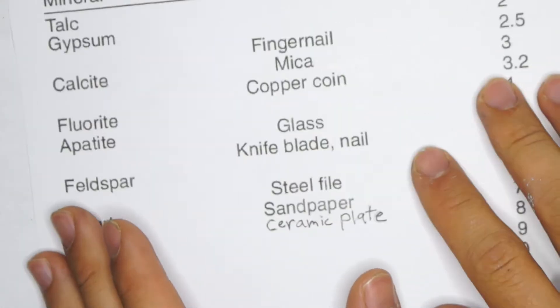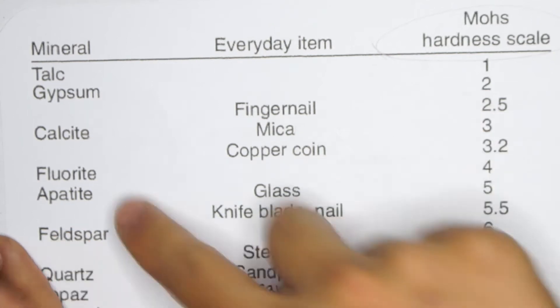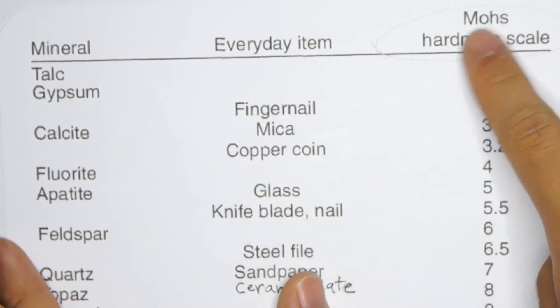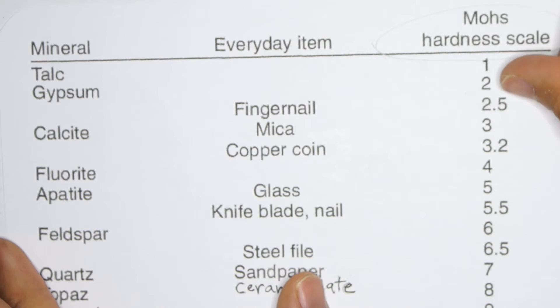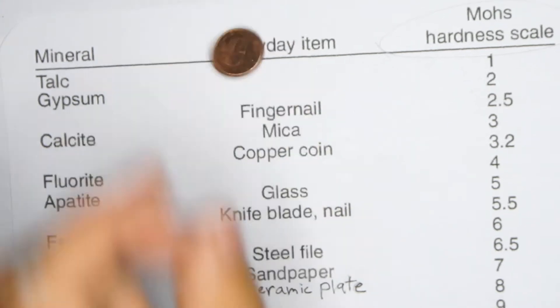That's a general overview of our Mohs hardness scale. Just remember you'll be testing these known things you have like your fingernails to these minerals, so you can give a range like 2.5 to 3.2.